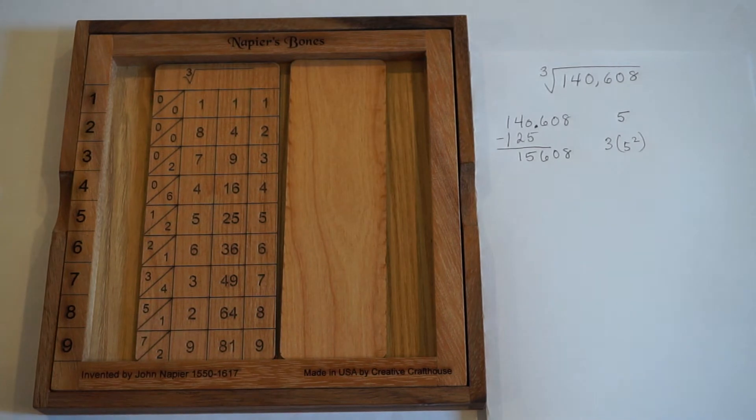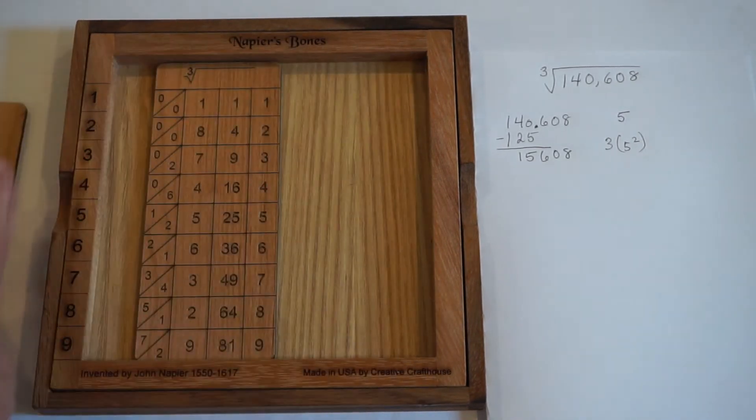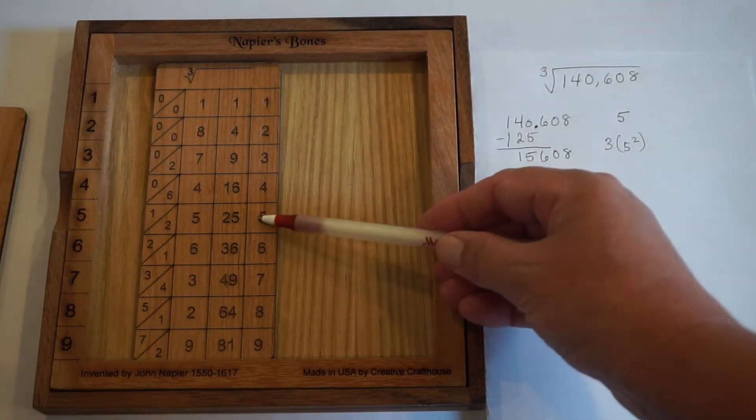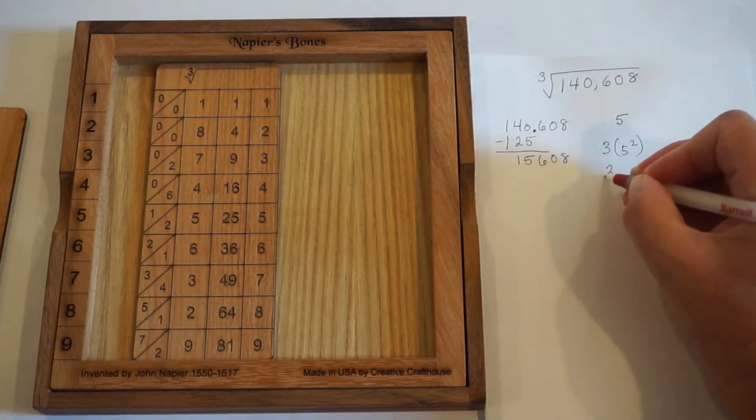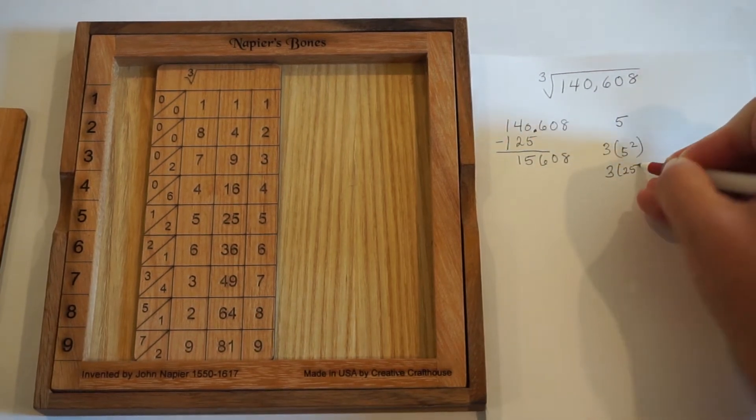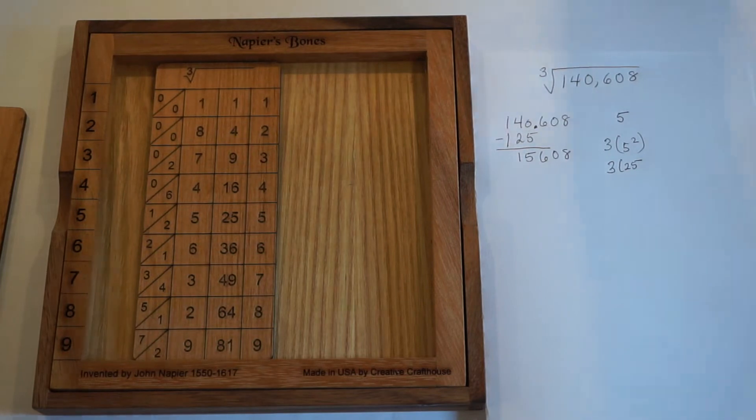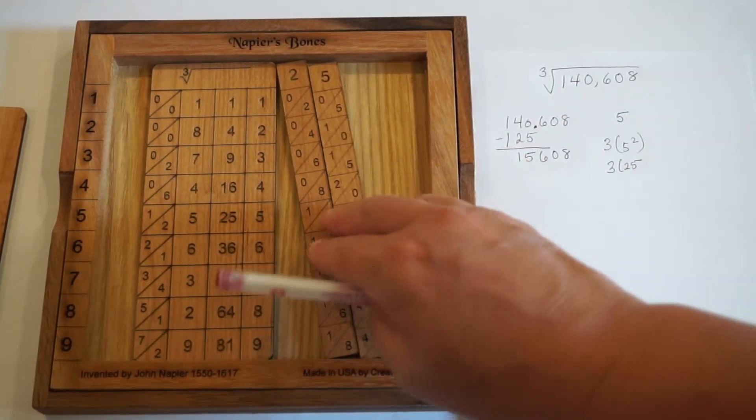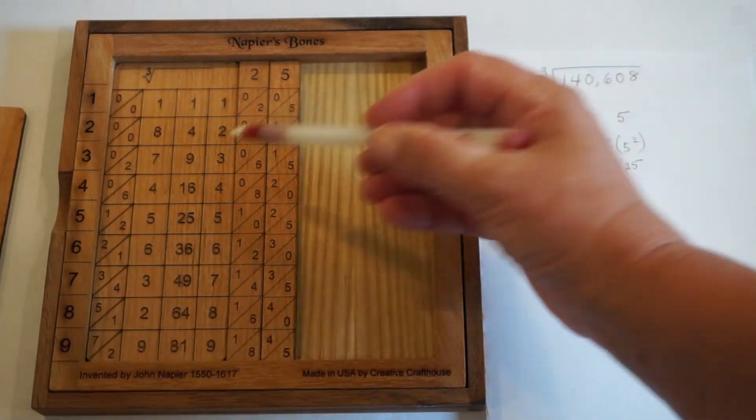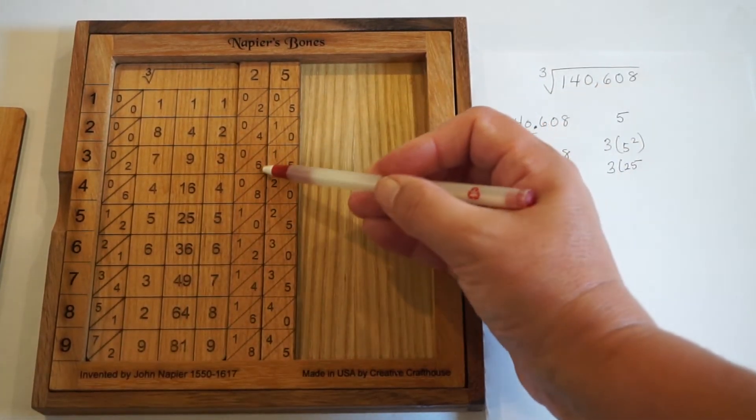Now if I need some help in doing that I can actually come to the back here and say well what's 5 squared, that's 25. And so I've got 3 times 25. And if I need to do 3 times 25, if I don't know what that is, I can actually also use the back of this rod and say well 3 times 25 is 75.